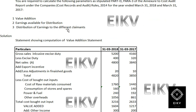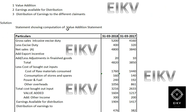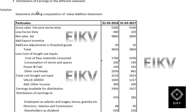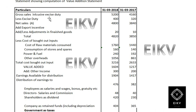I am going directly to the solution. I have prepared a Value Added and Distribution Statement, which contains value addition as well as distribution of earnings. We need to compute the value addition and distribution for two years, 2018 and 2017, starting with the value addition statement.